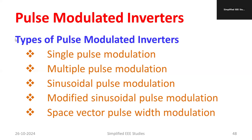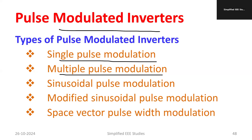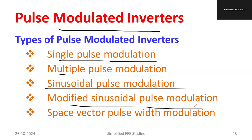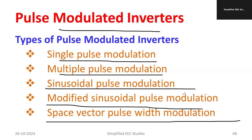The classification of pulse modulated inverters includes: single pulse modulation, multiple pulse modulation, sinusoidal pulse modulation, modified sinusoidal pulse modulation, and ultimately space vector pulse width modulation. These are the classifications of pulse modulated inverters.